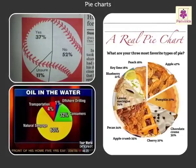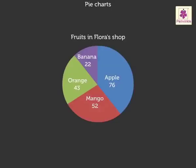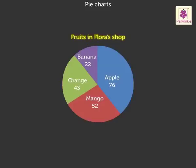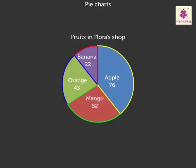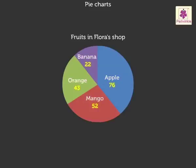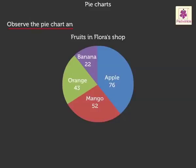Look at the pie chart and let us learn how to read it. The circle represents all the fruits in the shop. The title tells us that the pie chart is about different fruits in Flora's fruit shop. The circle is divided into smaller parts called segments. Each segment represents a different fruit and a specific value — here it is the number. Pie charts are best used to compare parts of a whole.